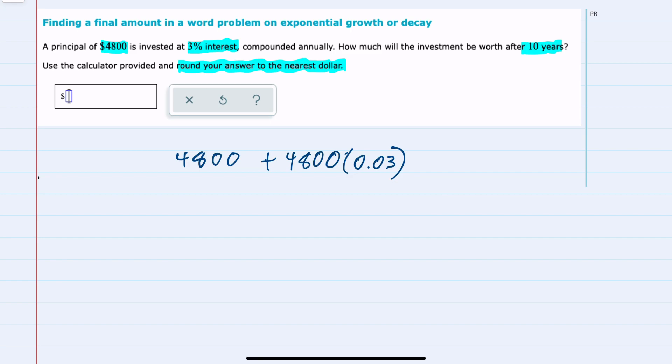Another way of viewing this calculation is that it is the principal times 1.03, where multiplying by 1 gives us the original amount, and then the 0.03 adds the interest onto the original amount, but in one step, one calculation multiplying by 1.03.